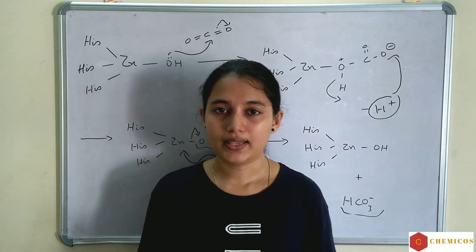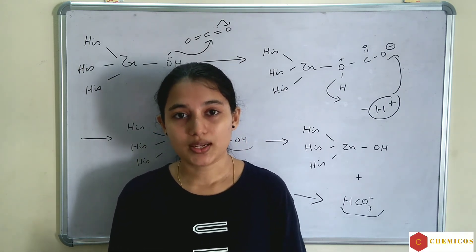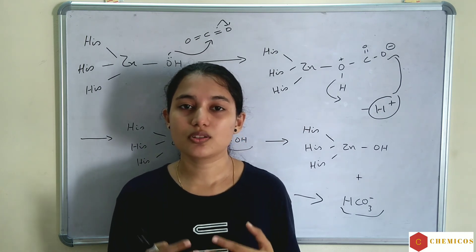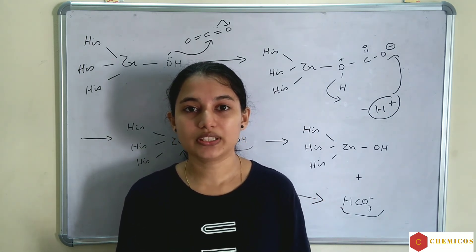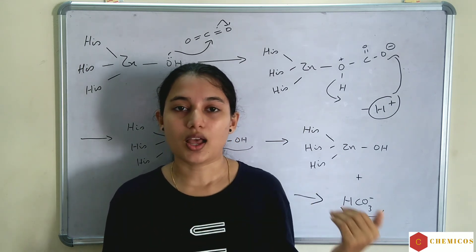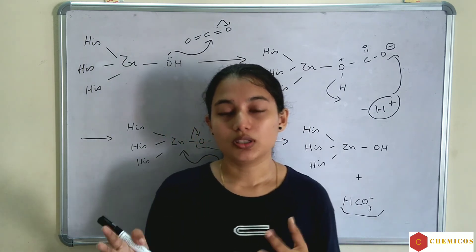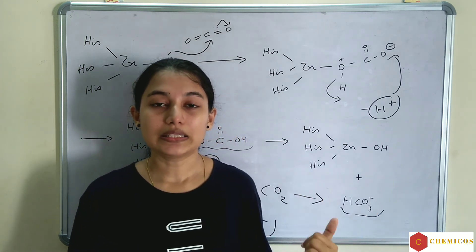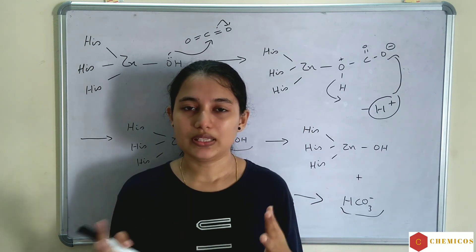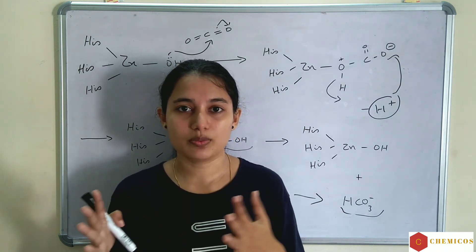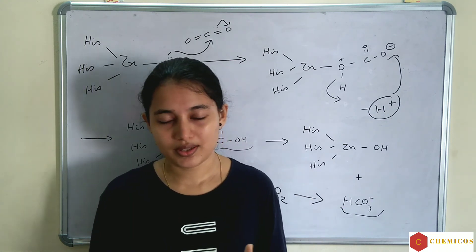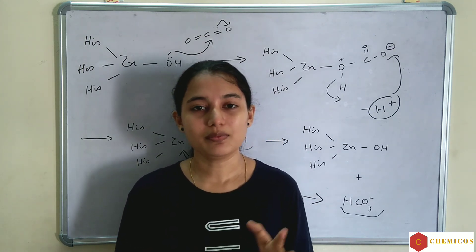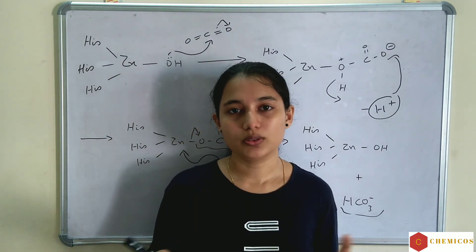To summarize, we discussed carboxypeptidase A and carbonic anhydrase. Both are metalloenzymes and both contain zinc as the metal atom. Carboxypeptidase A is used for hydrolysis of protein chain (C-terminal), and carbonic anhydrase is used for converting CO₂ to HCO₃⁻. The molecular weight of carboxypeptidase A is 34,600 and carbonic anhydrase is 30,000. Metalloenzymes are biological catalysts containing a metal atom, and zinc is the common metal in both enzymes.